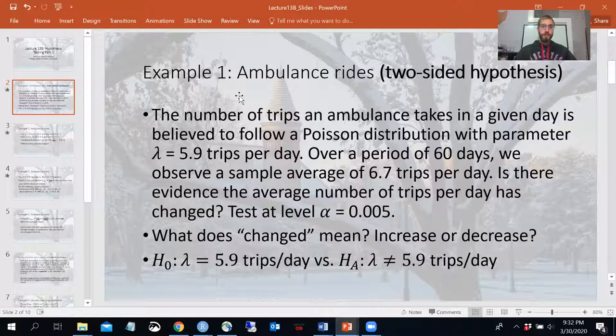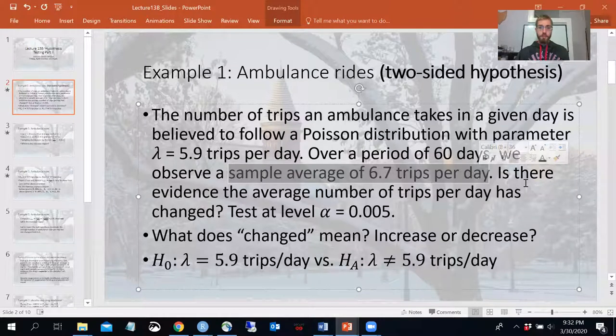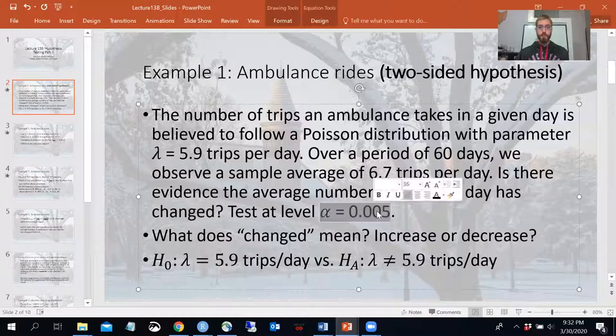So we gather 60 days' worth of data and we observe a sample average of 6.7 trips per day. Keep in mind the way I've worded this here, that's X bar in this problem, right? I haven't given you the symbol for it. You need to be able to parse that out of the words. The sample average is the sample mean is X bar. Is there evidence that the average number of trips per day has changed? So that word changed is kind of a loaded word because that can mean two different things. Change can mean it got higher or it can mean it got lower. Test at the level alpha equals 0.005. Careful, there's an extra zero in there. We have a low type one error rate that we've calibrated here.